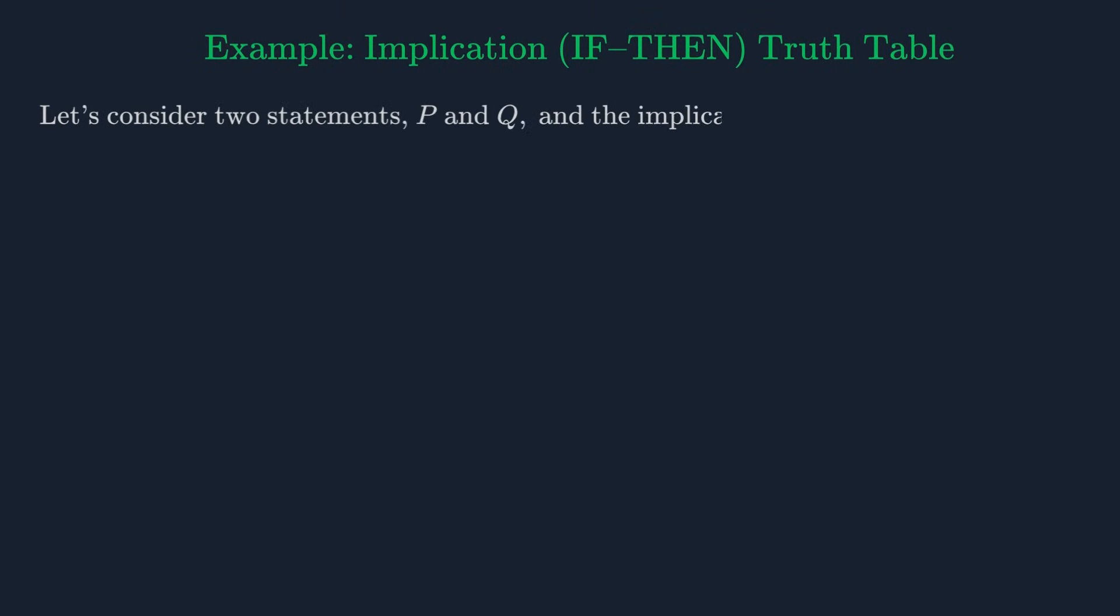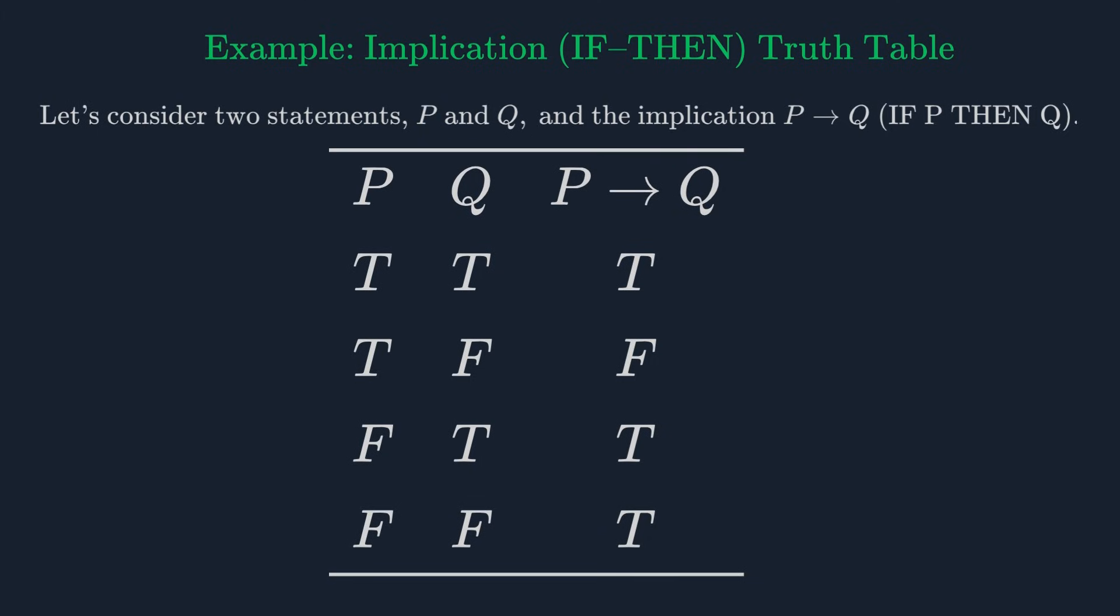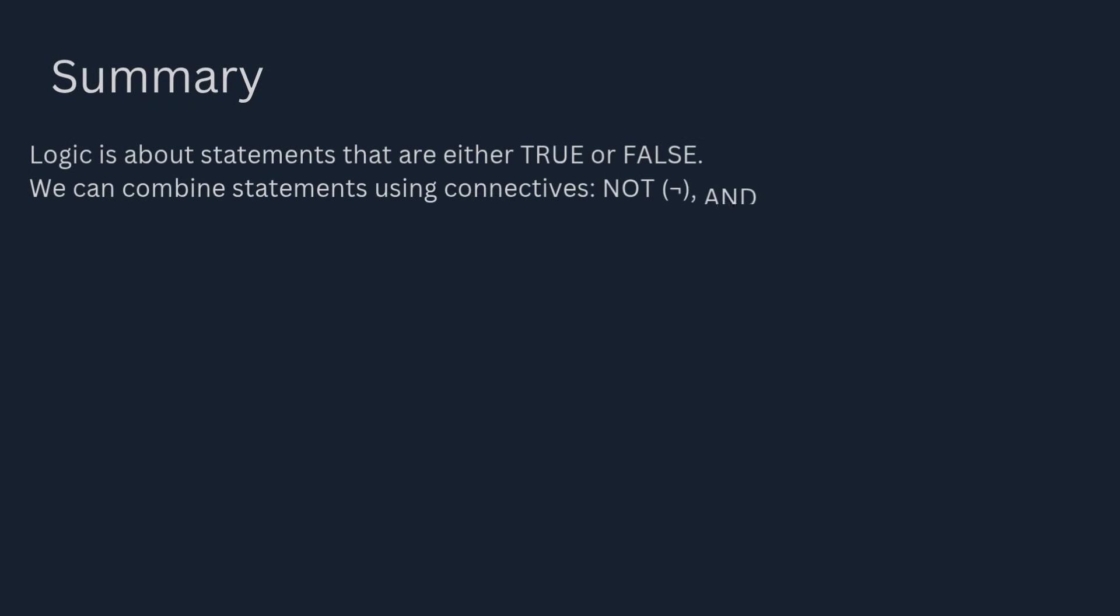Here's the truth table for implication. Notice how the statement IF P THEN Q is true when P is false, regardless of Q. This can be a bit counterintuitive at first, but it's a standard rule in logic. So to recap: we've learned that logic is about statements that are either true or false, and we can combine them using connectives like NOT, AND, OR, and IF-THEN. Truth tables help us understand the truth value of these combinations.